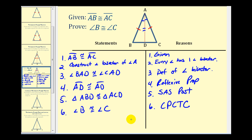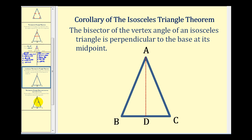Now we have a proof of the isosceles triangle theorem. There's also a corollary to this theorem: the bisector of the vertex angle of an isosceles triangle is perpendicular to the base at its midpoint. So D would be the midpoint of segment BC, and it forms a right angle with that segment. We won't prove this corollary in this video.